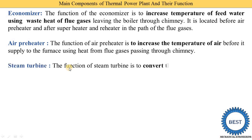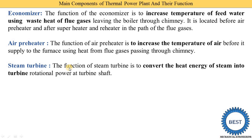The next component is the steam turbine. In a thermal power plant, the four main components are the boiler, turbine, condenser, and pump. The function of the steam turbine is to convert the heat energy of steam into mechanical energy in the form of rotational power.